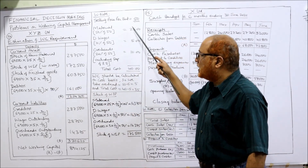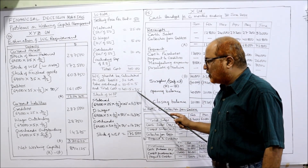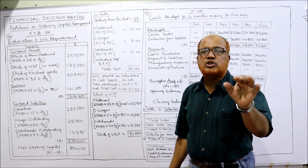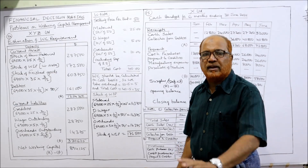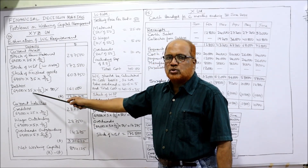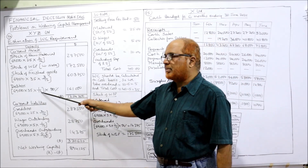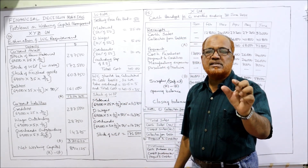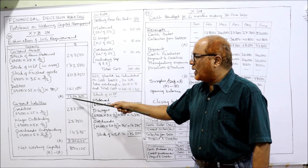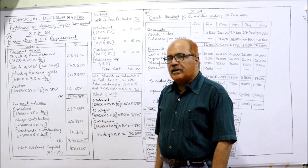Stock of finished goods: 69,000 units into 35 rupees total cost (not 40, because 5 rupees depreciation is deducted) into 3 by 12 — 3 months storage period — equals 6 lakh 3 thousand 750 rupees. Debtors: 69,000 units into 35 rupees total cost into 1 by 12 — one month credit period to customers — into 80%, because 20% sales are cash sales. Total current assets come to 12 lakh 24 thousand 750 rupees.